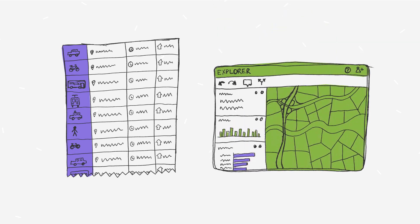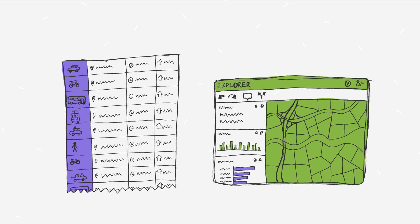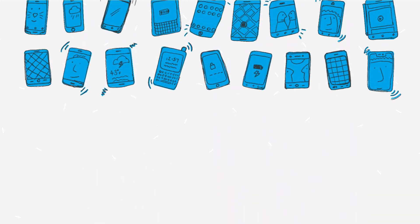Replica is made up of two parts: a Replica activity table, a database representing all the trips and activities by people in an area, and Explorer, an easy-to-use interface for querying the data and creating maps and charts.